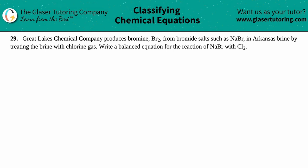Number 29. Great Lakes Chemical Company produces bromine, Br2, from bromide salts such as NaBr in Arkansas brine by treating the brine with chlorine gas. Write a balanced equation for the reaction of NaBr with Cl2.